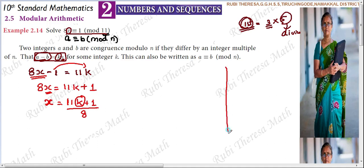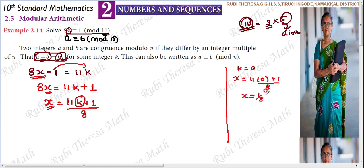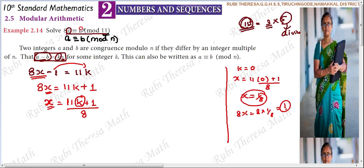We substitute k equal to 0. Then x equals 11 into 0 plus 1 by 8, which is 0 plus 1 by 8, that is 1 by 8. Since 1 by 8 is not an integer, k equals 0 does not give us a valid solution.